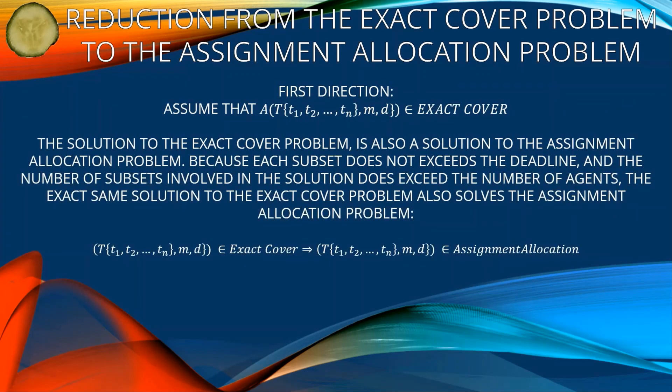First direction: assuming that the arguments a, t = {t1, t2, ..., tn}, m, and d are in exact cover, the solution to the exact cover problem is also a solution to the assignment allocation problem, because each subset does not exceed the deadline and the number of subsets involved in the solution does not exceed the number of agents we have at our disposal. The exact same solution to the exact cover problem also solves the assignment allocation problem.